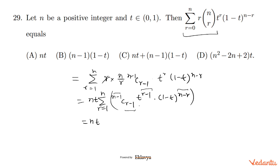N minus 1 minus R minus 1 is N minus R. So this is nothing but the opening of T plus 1 minus T, direct opening raised power N minus 1. So that is nothing but N T into 1. T plus 1 minus T is 1, so that is N T. Final answer must be N T, option number A.